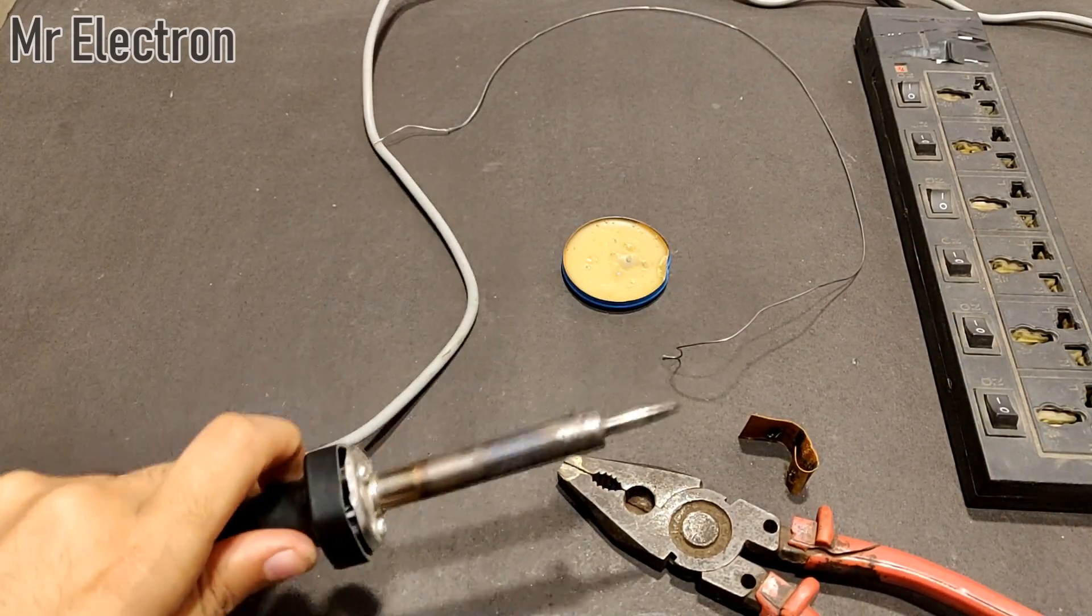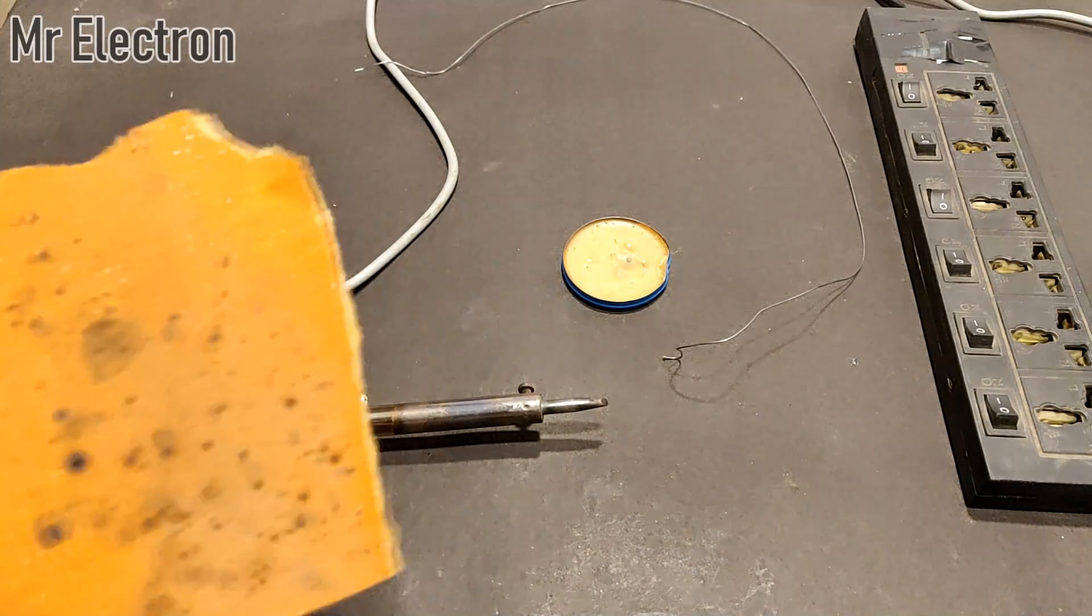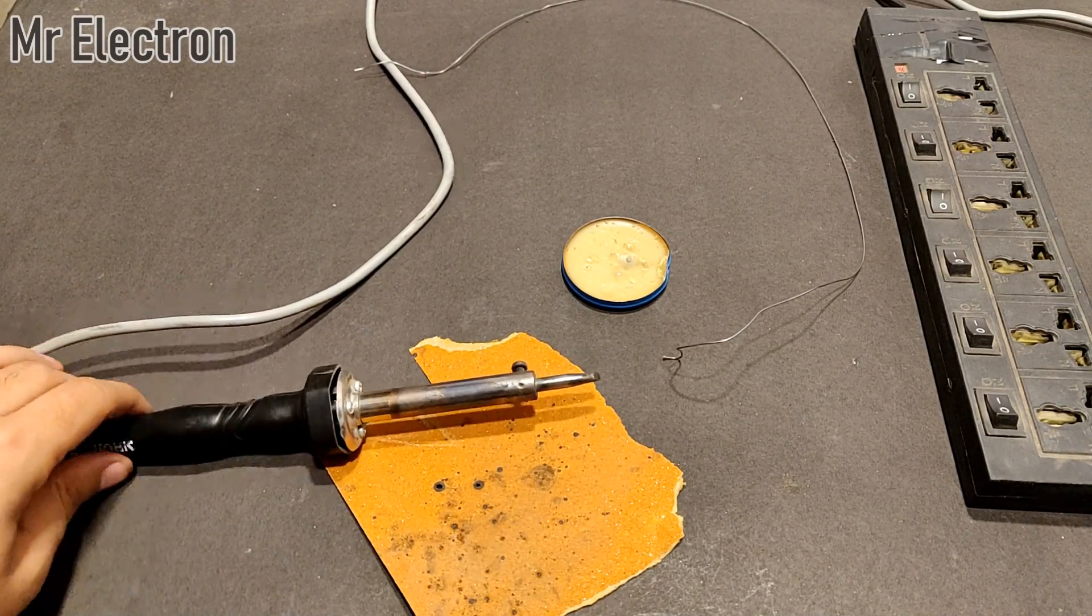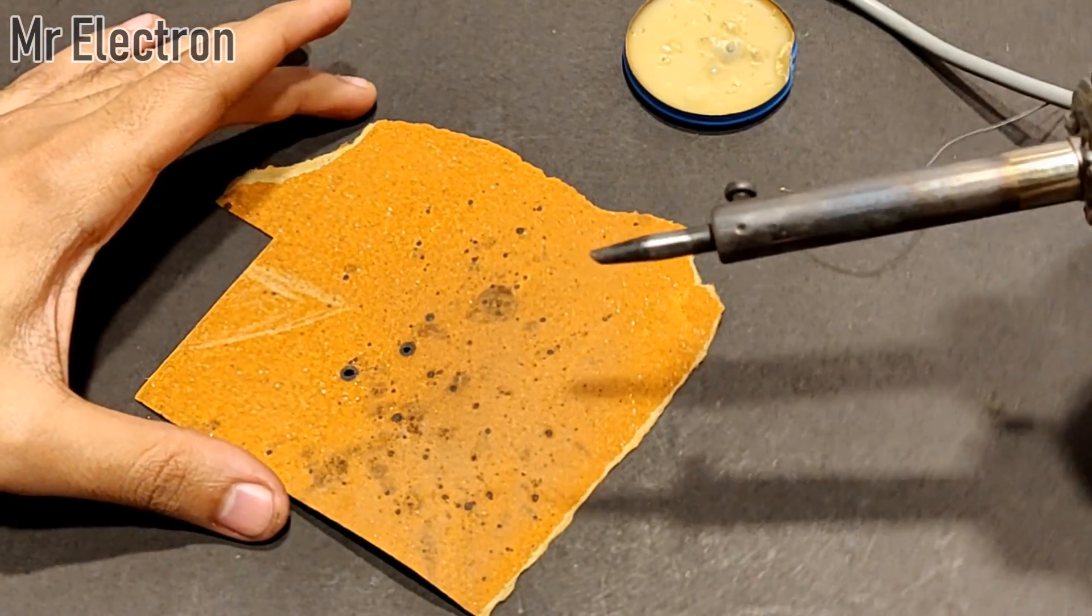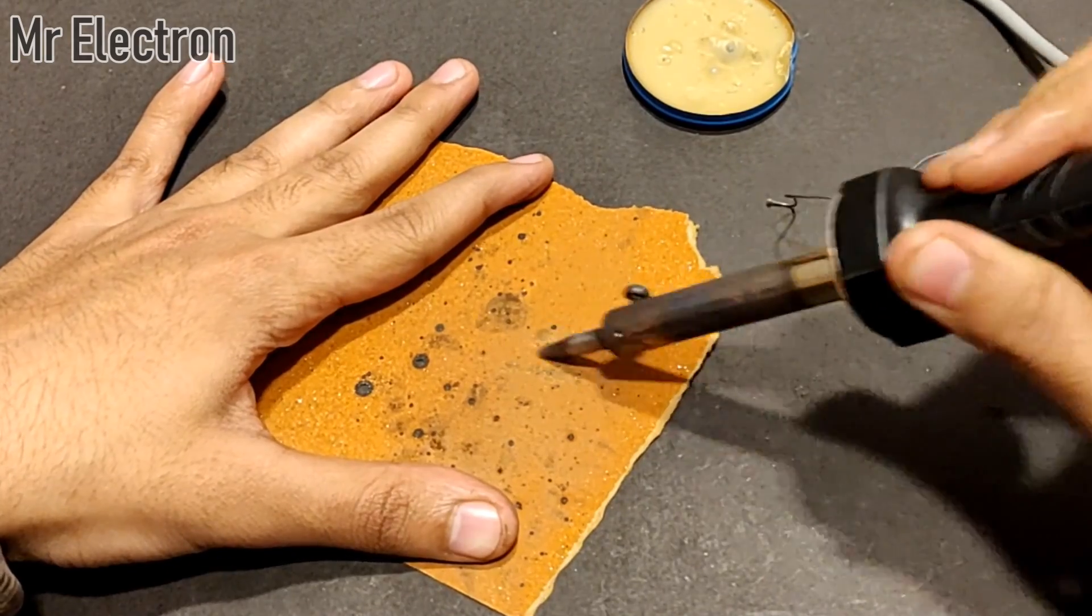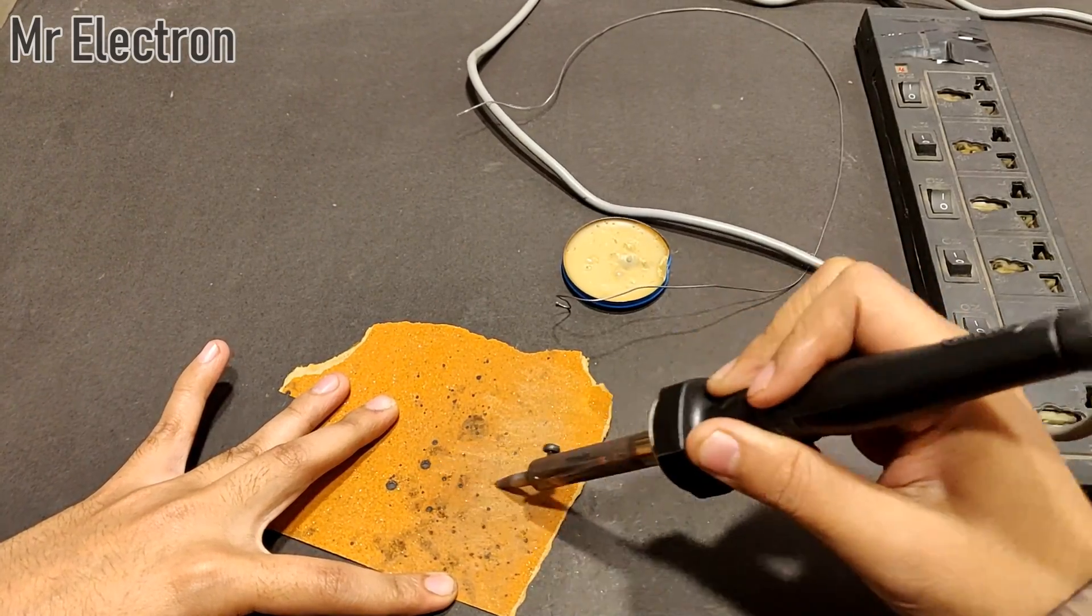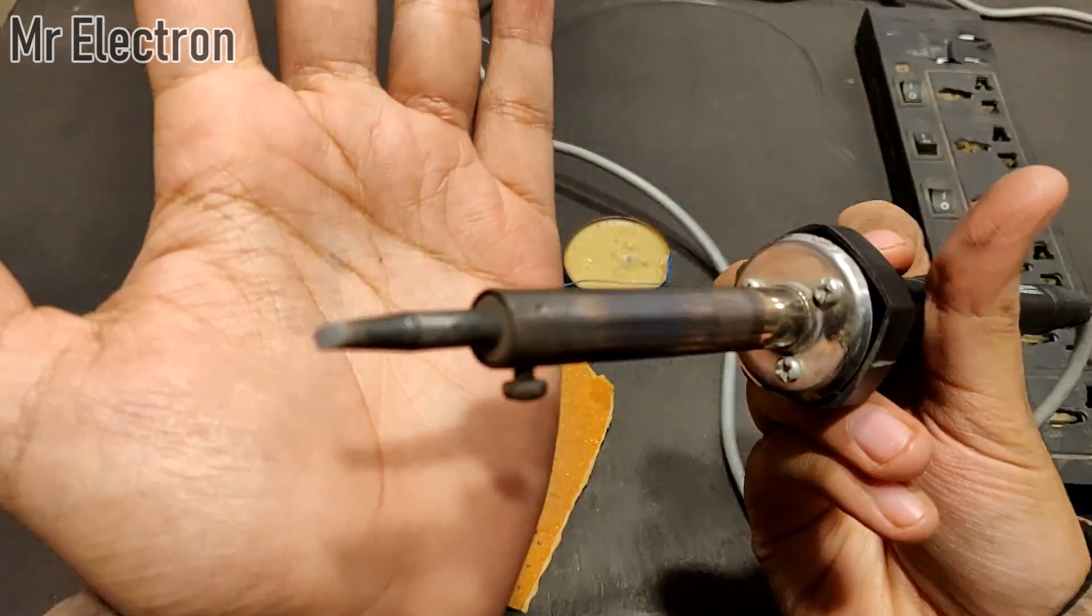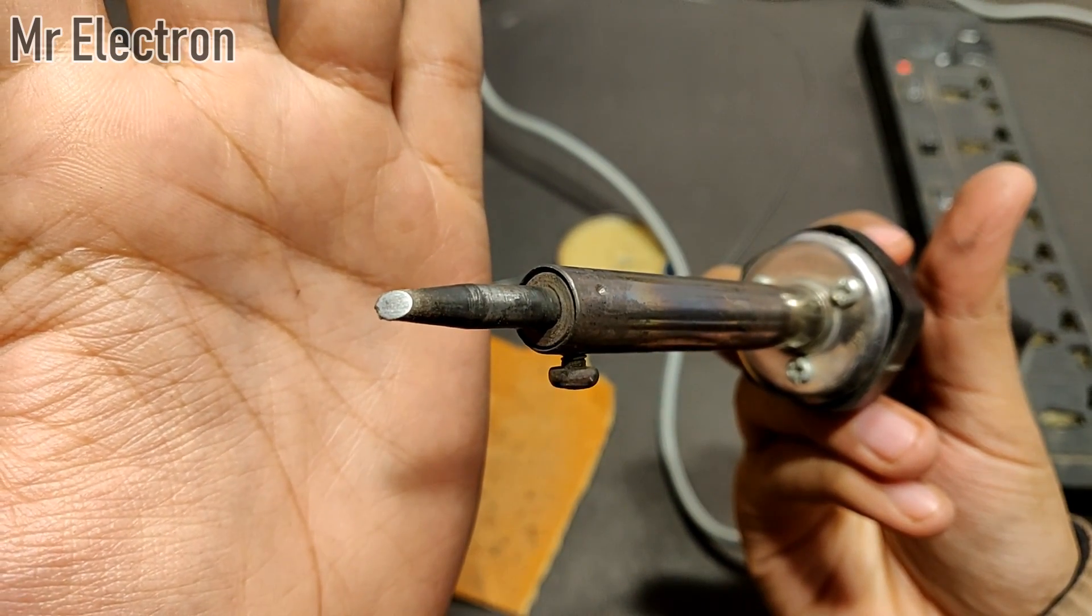Okay, so the first part is completed. Now comes the second part. Take the leftover sheet of your sandpaper, place the soldering iron tip at 45 degrees and move it like this. You see, the metal that was beneath the black coating is now out.